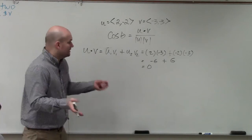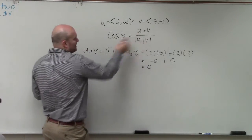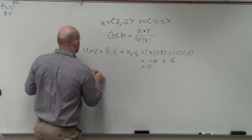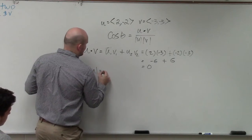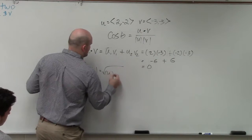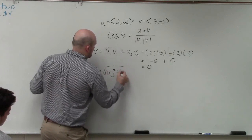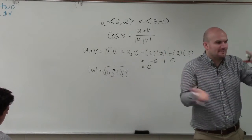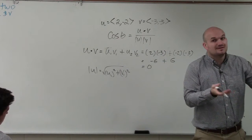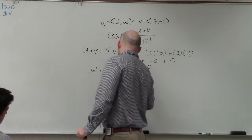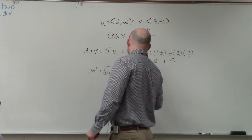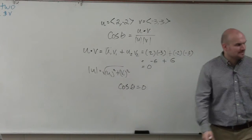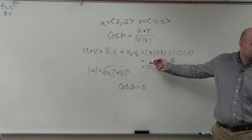Now ladies and gentlemen, anything divided by the magnitude — you guys already know we can figure out the magnitude — but that's kind of a waste of time, because 0 divided by any number is always going to be 0. So the cosine of theta is equal to 0. You don't really need to find the magnitude; it's kind of a waste of time in this problem because our numerator, our dot product, is 0.